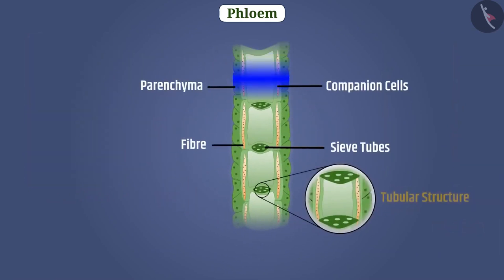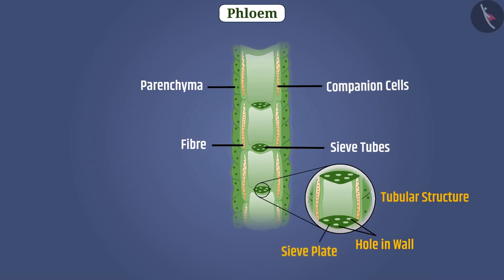The structure of phloem sieve tubes is tubular and in their walls, holes are present. In these sieve tubes, a sieve plate is present. The companion cells are adjacent to sieve tubes. Through the sieve plate, companion cells provide energy for the movement of food.